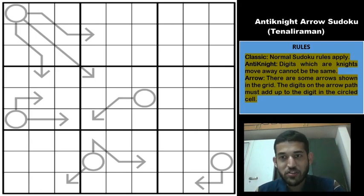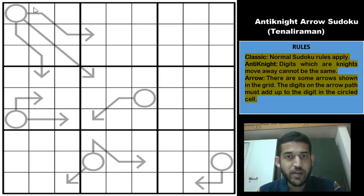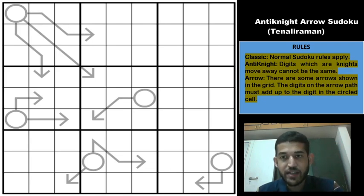Please subscribe to the channel if you have been enjoying the content we are producing each day, and hit the bell button below. Now let us move on to the rules. Normal classic rules apply: each row, each column, and each three-by-three box contains the digits from one to nine without repetition. The next part is anti-knight: digits which are a knight's move away cannot be the same.